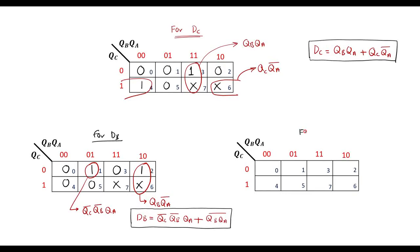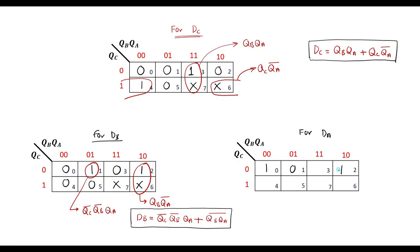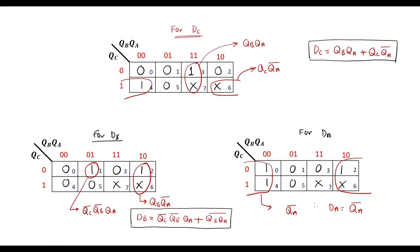For DA, the K-map values are 1,0,1,0 and 1,0,X,X. Grouping: the four 1s and X's form a quad. The common factor across these columns is QA=0, which is QAbar. Therefore, DA = QAbar. We have now found the Boolean expressions for all three flip-flop inputs: DC, DB, and DA.